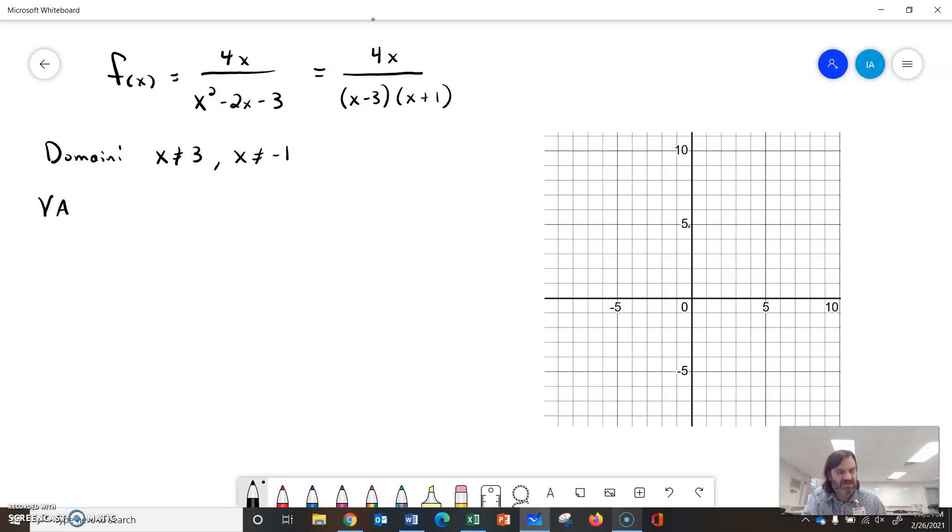So since nothing reduced, I have vertical asymptotes at x = 3 and x = -1. I'm going to draw those on my graph, negative 1 over here.